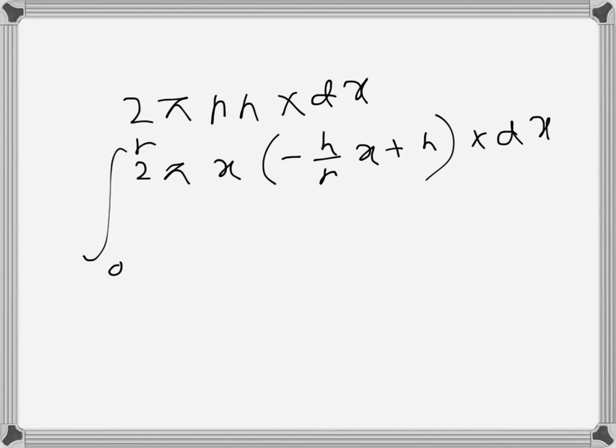This is what we need to integrate from 0 to r. So 2π is there, and this is minus h over r times x squared plus hx dx. We can take the h out as well, so it becomes minus x squared over r plus x dx.